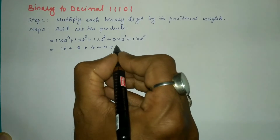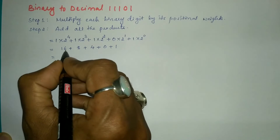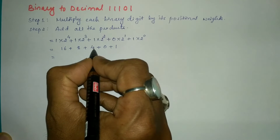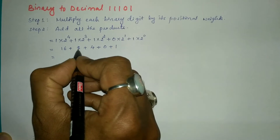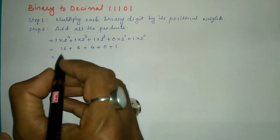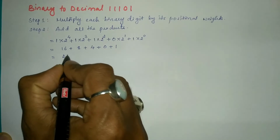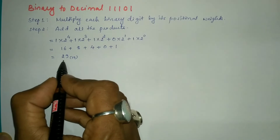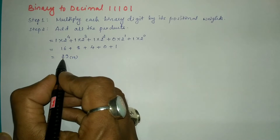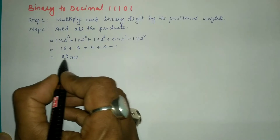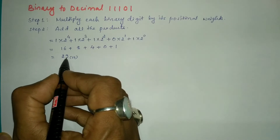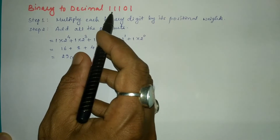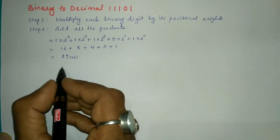Next, we simplify: 16 + 4 = 20, plus 8 = 28, plus 1 = 29 base 10. Now I have to verify whether the answer 29 is exactly equal to the given binary number or not.